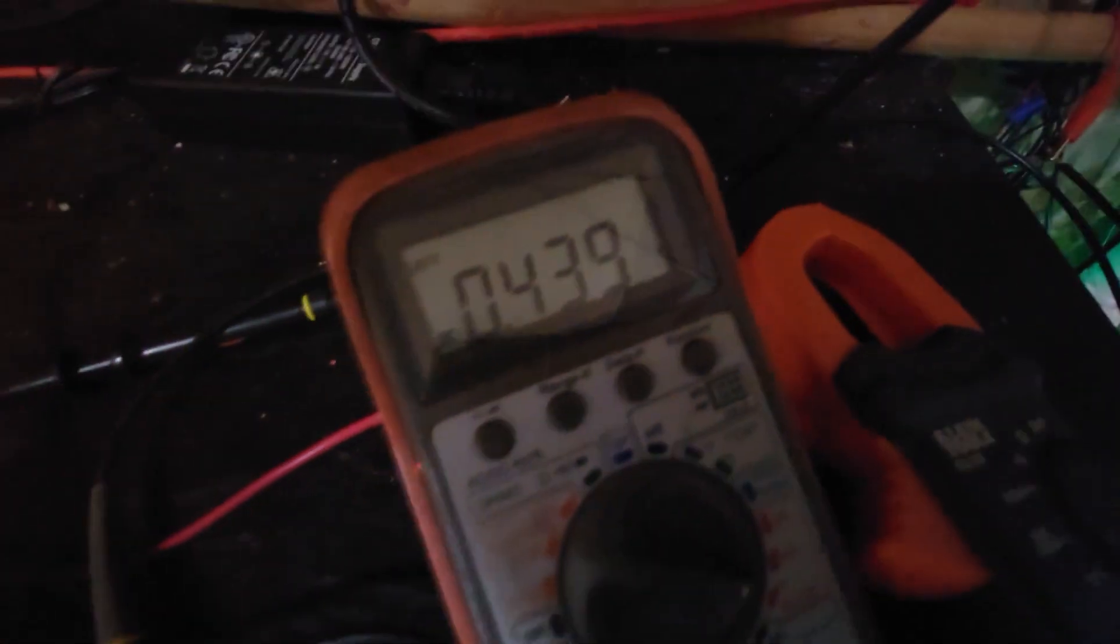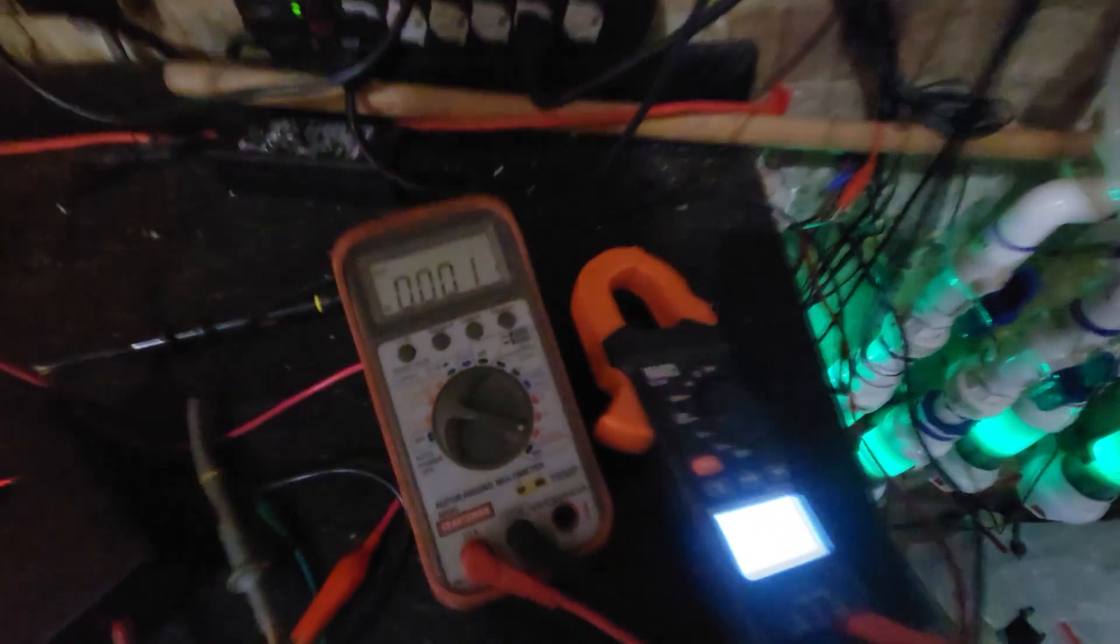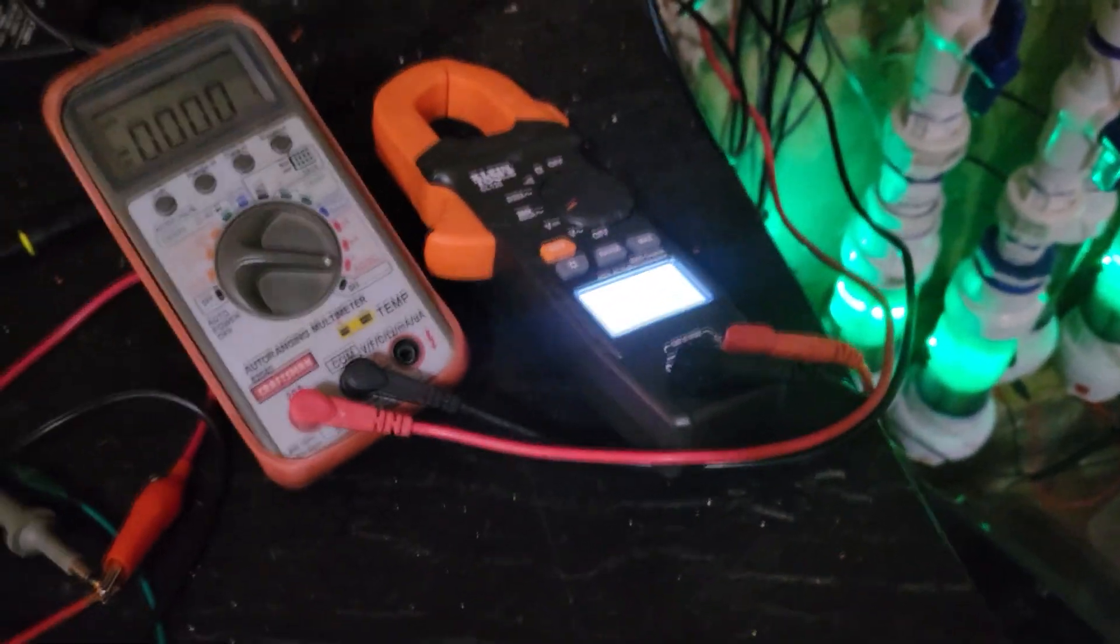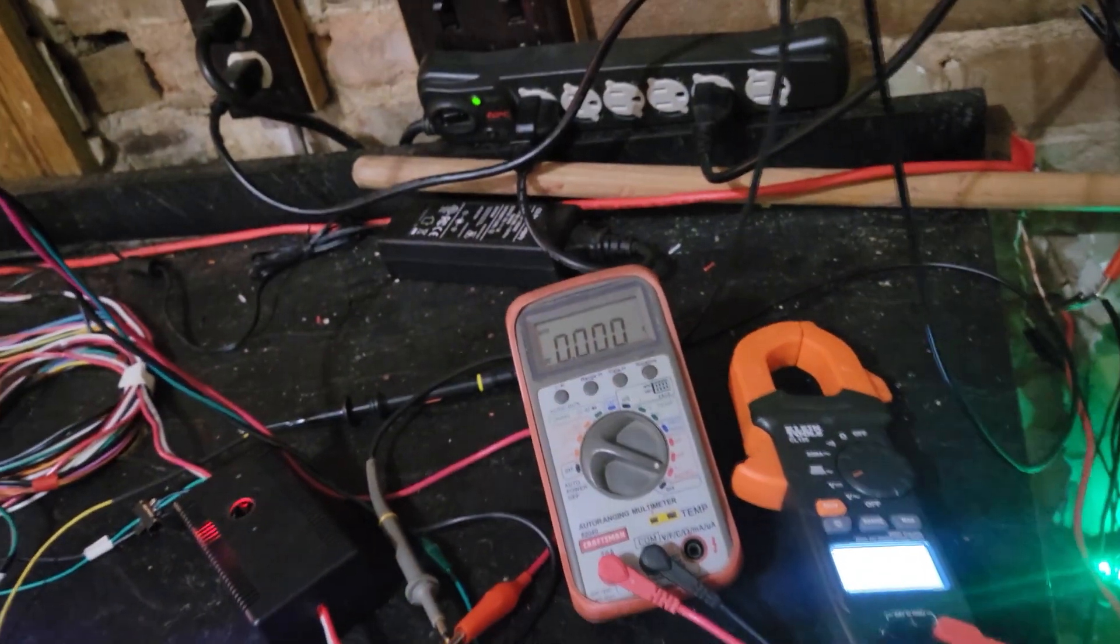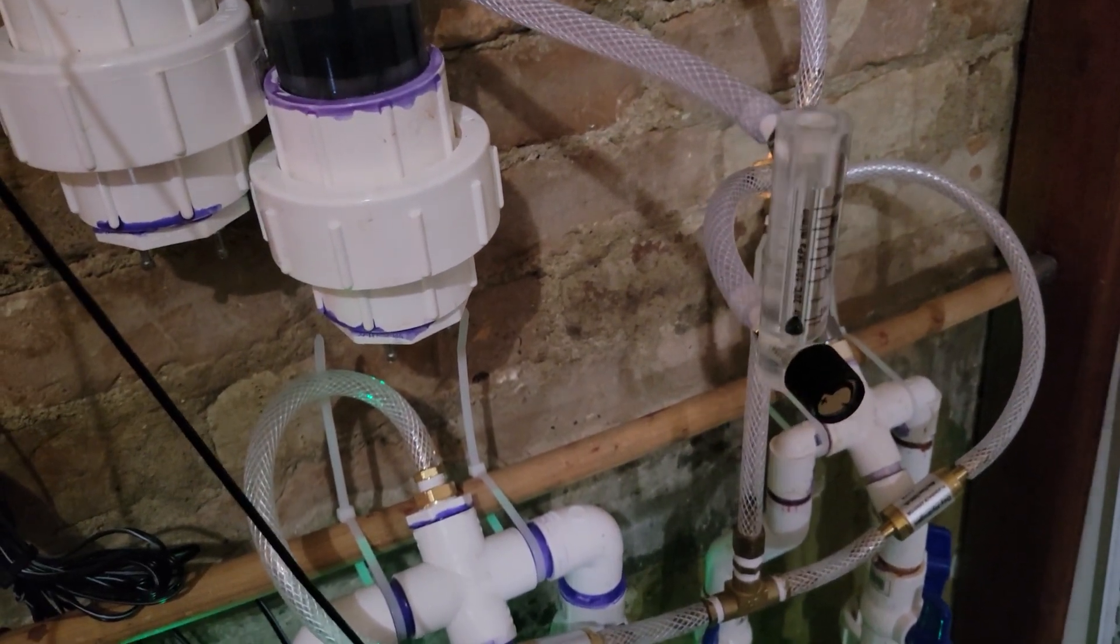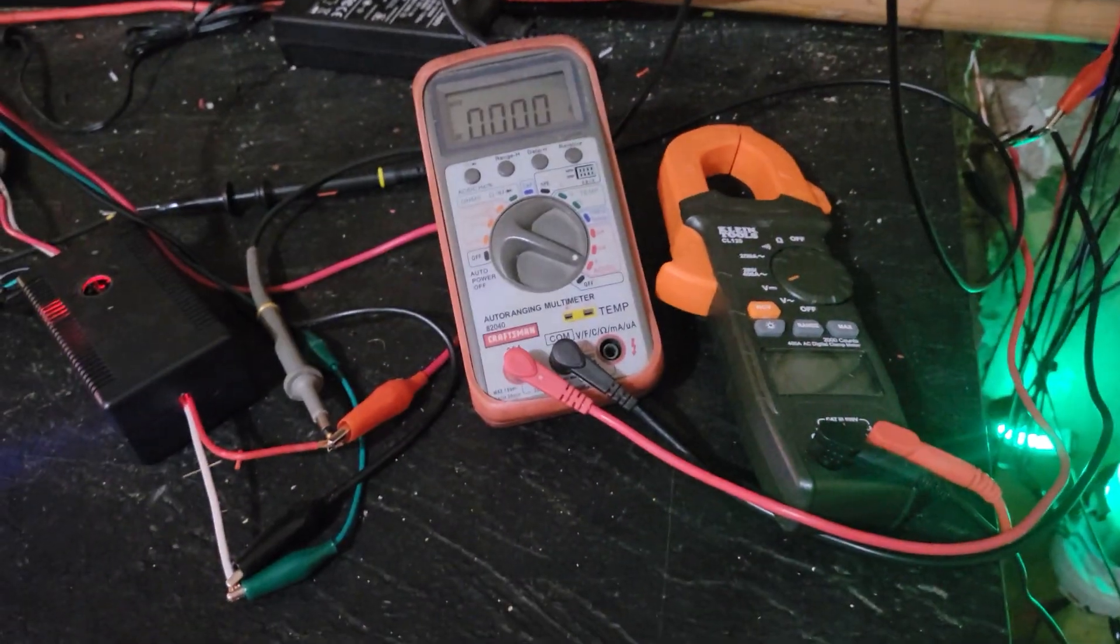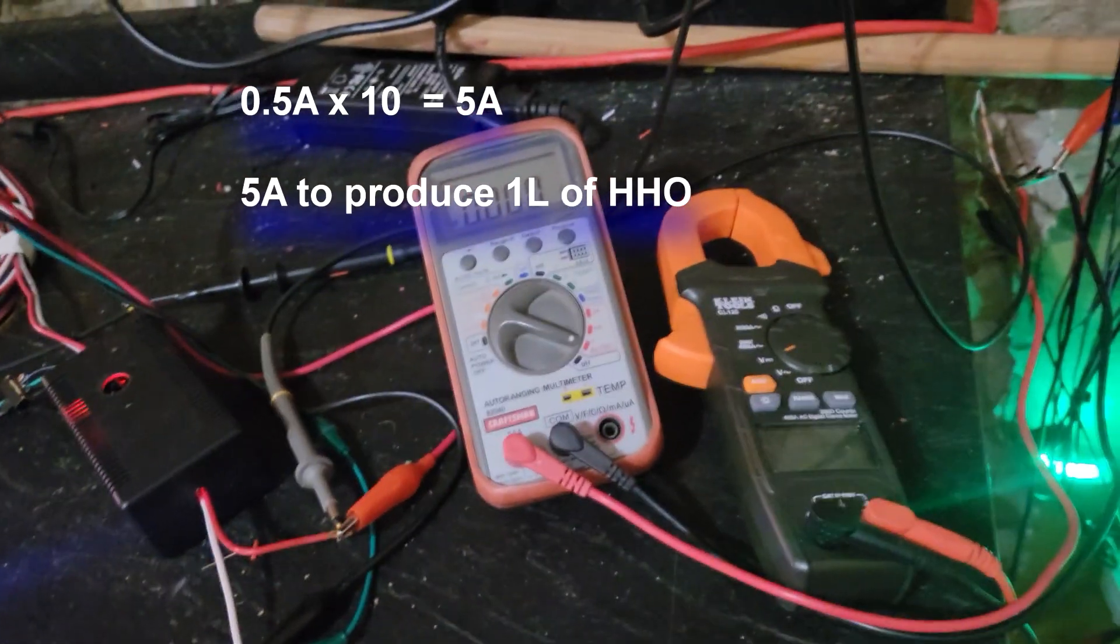But still only 400 milliamps being consumed. Let's do some math real quick. So let's say we're making gas at 500 milliamps to keep it easy, and we're creating one tenth of a milliliter per minute. That means it would take five amps to create one liter per minute.